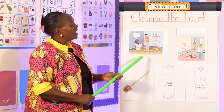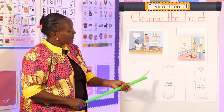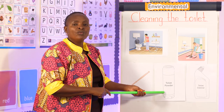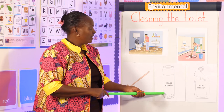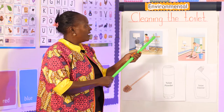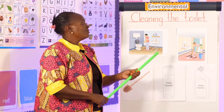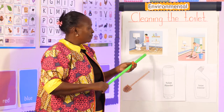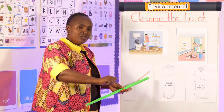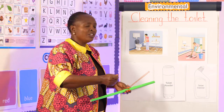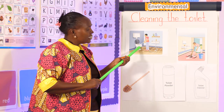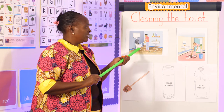And then we also use toilet powder — it depends on what you have. You can have a toilet powder, you can have Vim, you can have Harpik to put in the toilet, then use the brush to scrub everything off, and then rinse the way this man is doing here.